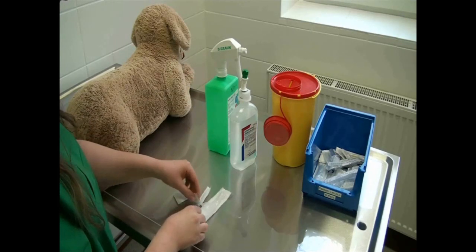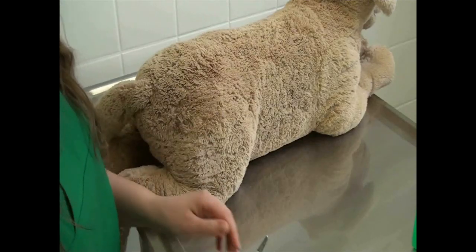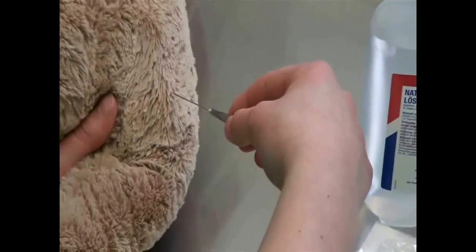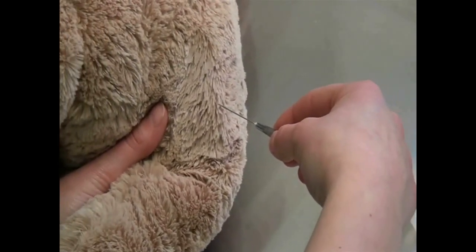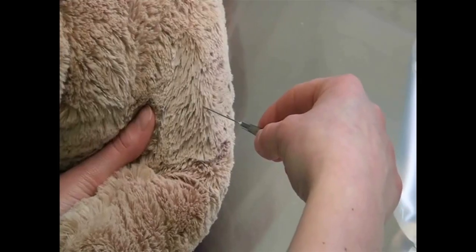The injection site is between the ischial tuberosity and the stifle. With your free hand, isolate and hold the muscles or the whole leg of the animal.